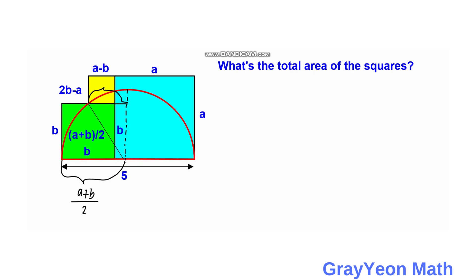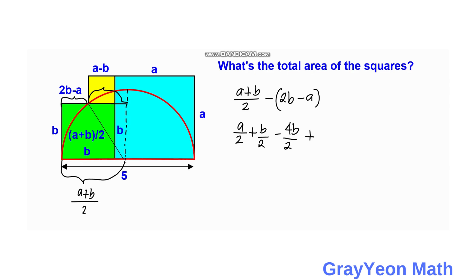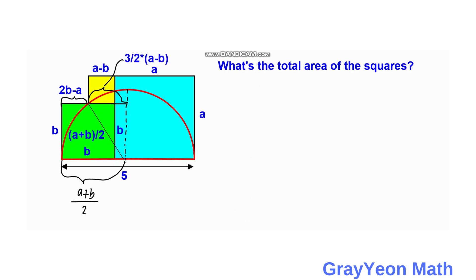We label this horizontal portion. It has a length of (a + b)/2 minus (2b minus a). Expanding: a/2 + b/2 minus 2b + a, which gives negative 3b plus 3a, all over 2. So that length is (3/2)(a minus b).